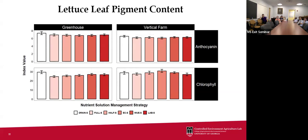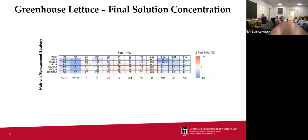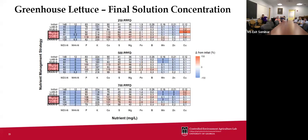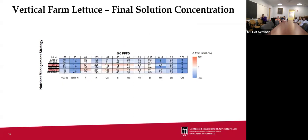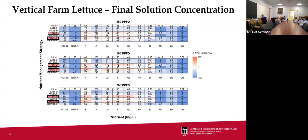We quantified how much of each element remained in solution at the end of the experiment. With elements on the x-axis and each row representing a nutrient management strategy, the color scaling shows blue for depletion and red for accumulation. Strategies that tended to use more fertilizer also tended to accumulate more elements in solution at the end of the experiment — this trend held across different light levels as well. Plants grown under higher light intensities tended to deplete elements faster across the board. In the vertical farm, EC-based and full-strength refill techniques ended up accumulating more nutrients in solution over time.